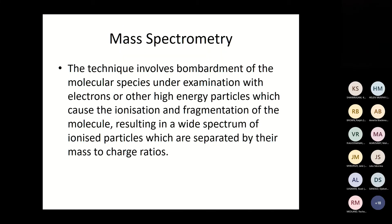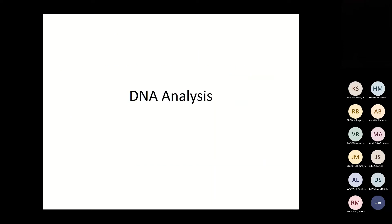Mass spectrometry is another method for looking at abnormal haemoglobin. It involves bombardment of the molecule under examination with electrons or other high-energy particles, causing ionisation and fragmentation. The resulting spectrum of ionised particles is separated by their mass-to-charge ratio. It is not performed here but may be available at other hospitals. DNA analysis methods include gap-PCR and full gene sequencing.